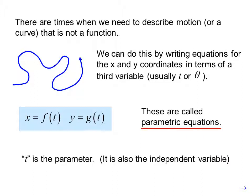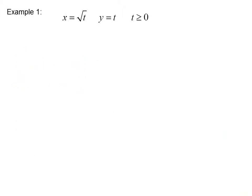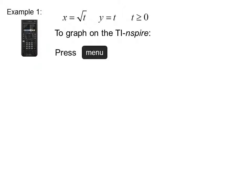For example, these are called parametric equations. T is the parameter, it is also the independent variable. Example one: x equals the square root of t, y equals t, t is greater than or equal to zero. To graph on the TI-nspire press menu, three, which is graph entry edit, and three again, which is parametric.